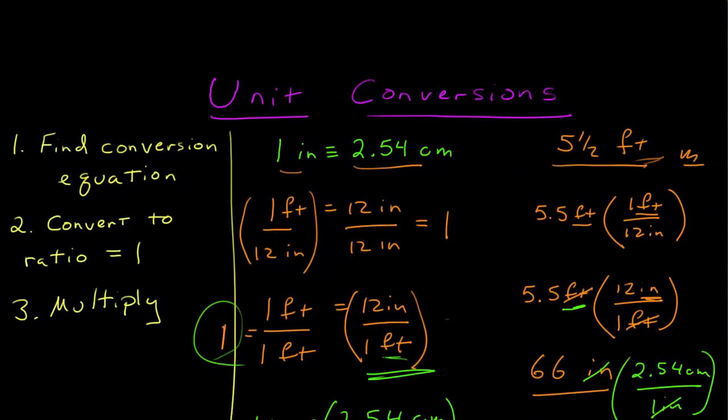Unit conversions are these three rules. Find a conversion equation, and it may take multiple steps, but once you find one of them, convert that equation into a ratio that equals the number 1 in such a way that it cancels out the unit you want to get rid of, and then you multiply that to convert your units.